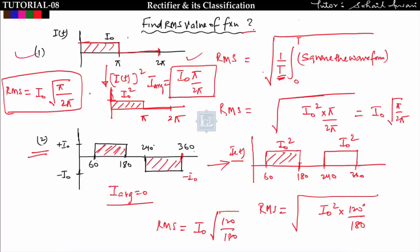This RMS calculation concept will be used when finding the conduction angle of a thyristor, the RMS value of thyristor and diode currents, and the circuit turn-off time. The method is: square the waveform, take the average of the squared waveform, and take the square root.